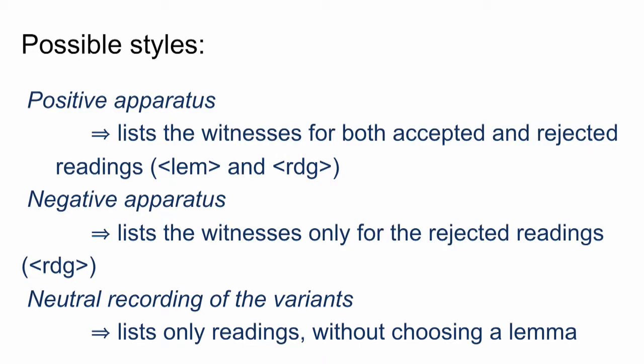You can have a negative apparatus. In this type of apparatus, you will list the witnesses only when they differ from the main text, from the lemma. This is what we've done in the examples we've seen so far.